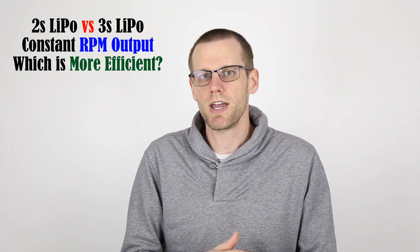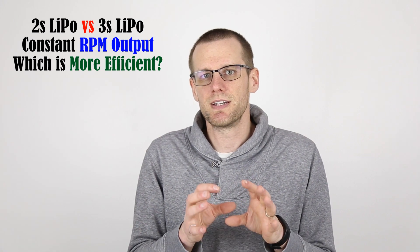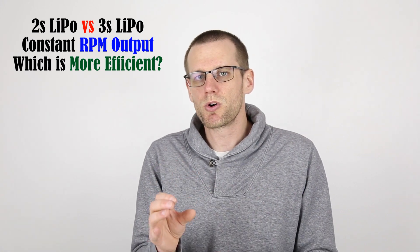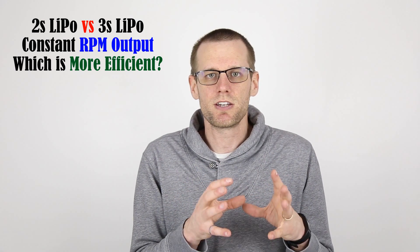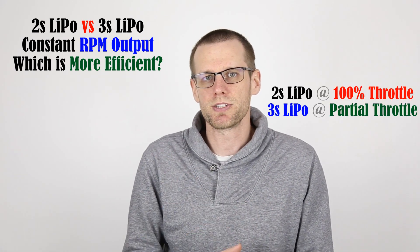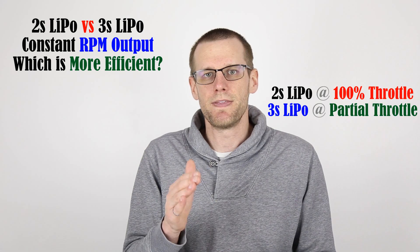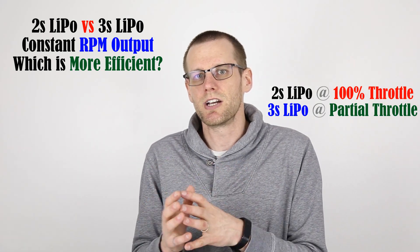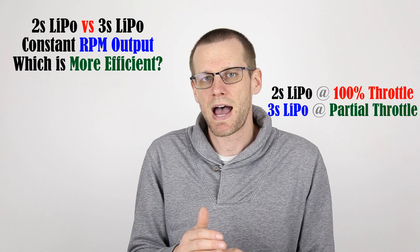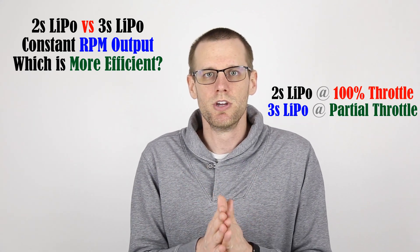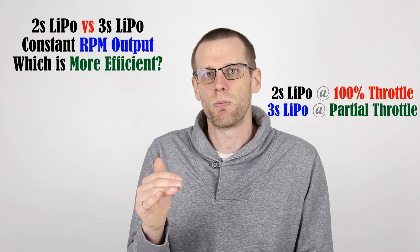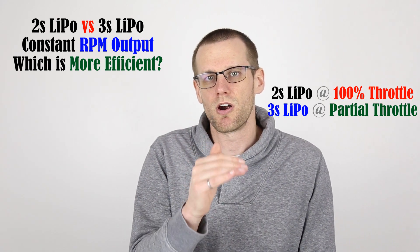What we're going to be looking at today is the difference between a 2S versus a 3S lithium polymer battery pack used for the same exact power system. What we're going to be doing differently is we're going to be operating that 2S pack at 100% throttle, hitting the maximum amount of RPM that that power system can push. And then our second scenario is going to be looking at that 3S pack, but we're going to operate it at a partial throttle so that we are able to hit the same mechanical output, that same overall RPM. Ultimately, our goal here is to look at which of the two power systems is going to provide us with the most efficient setup.